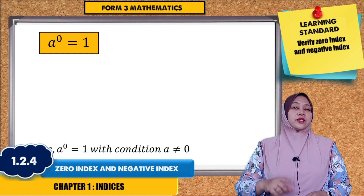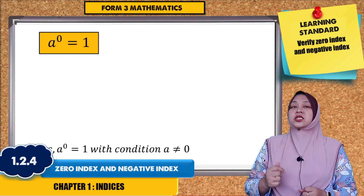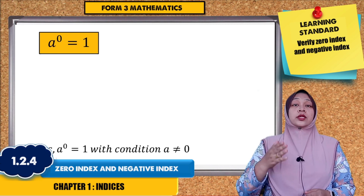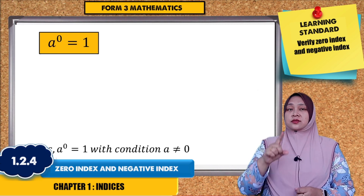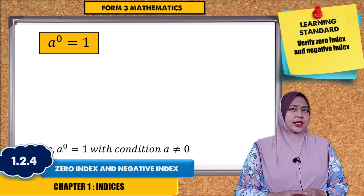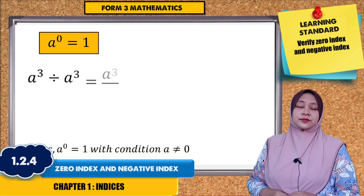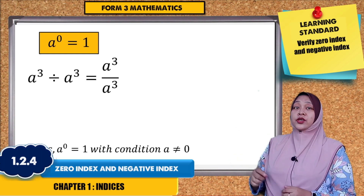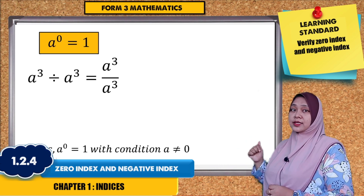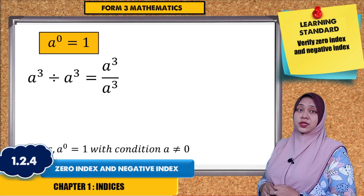Let us review the first law for today, which is zero index. A to the power of zero will give us the answer 1. How did you get it? Here is how we'll get the answer. A cubed divided by A cubed equals A cubed per A cubed.